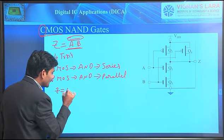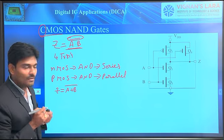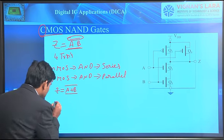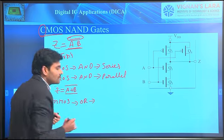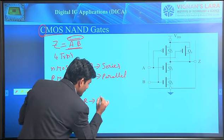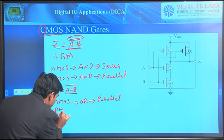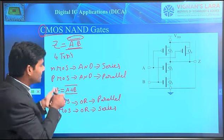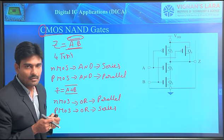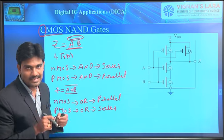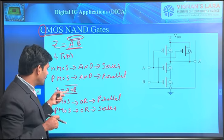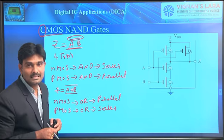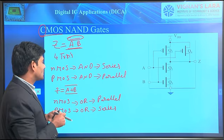If we want to realize a NOR gate circuit, we look at the relation between the 2 variables — they are performing the OR operation. If the input variables perform the OR operation, then in the N-MOS network those 2 transistors must be connected in parallel, and in the P-MOS network those 2 must be connected in series. So the thumb rule is: AND operation → N-MOS series, P-MOS parallel; OR operation → N-MOS parallel, P-MOS series.